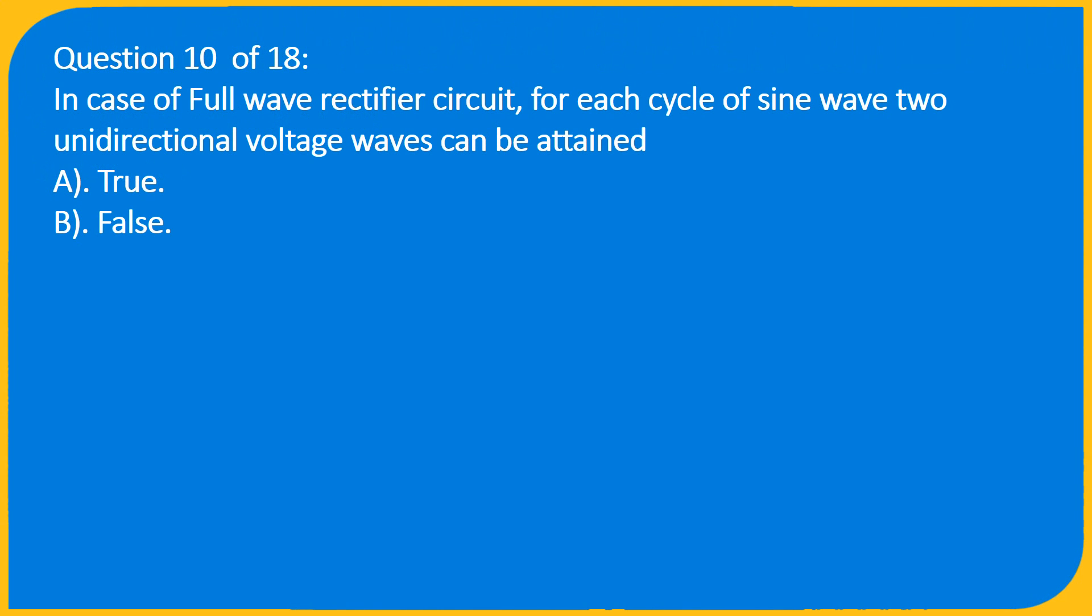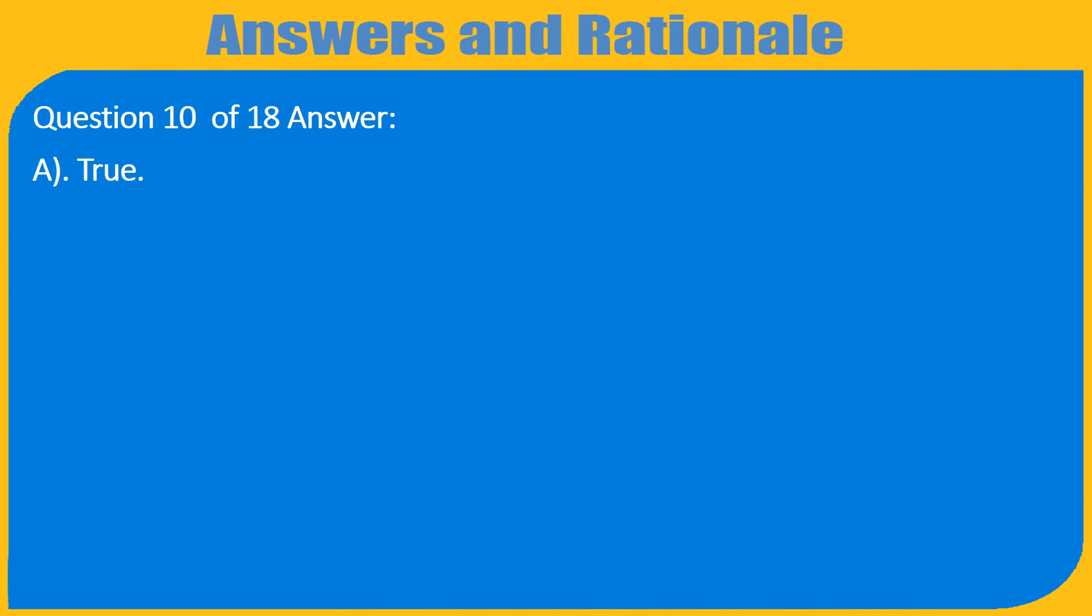Question 10 of 18: In case of full wave rectifier circuit, for each cycle of sine wave two unit direction of voltage waves can be attained. A. True, B. False. Question 10 of 18 Answer: A. True.